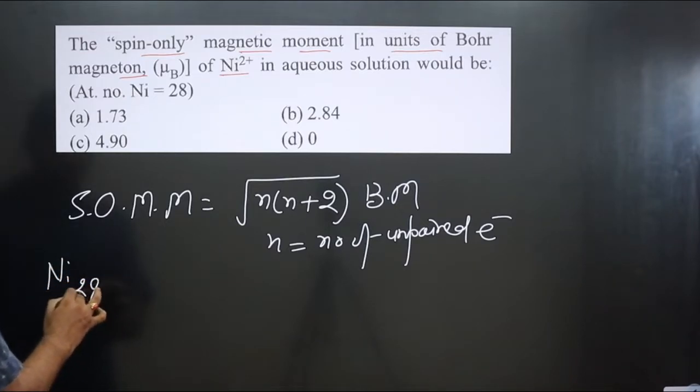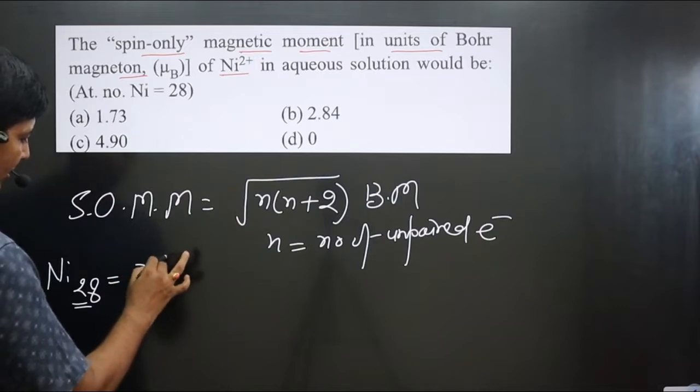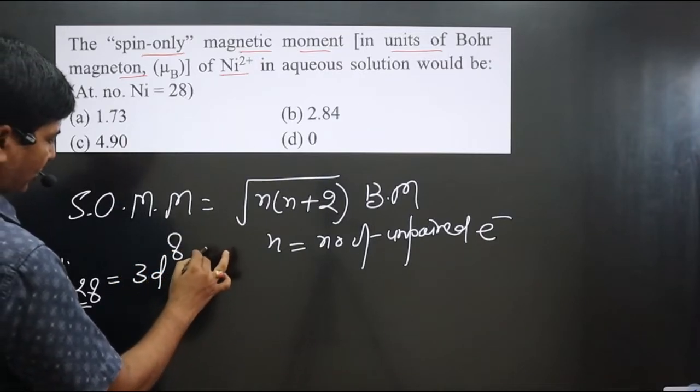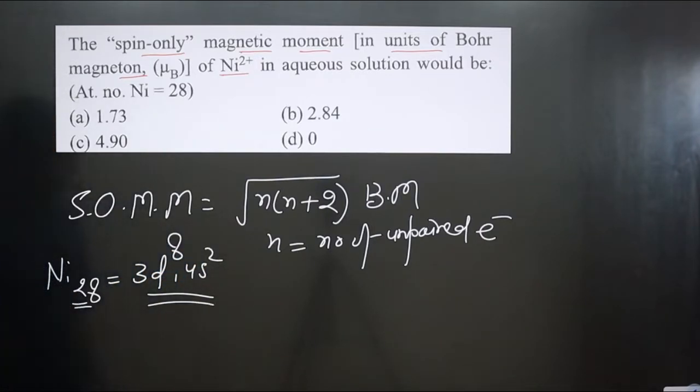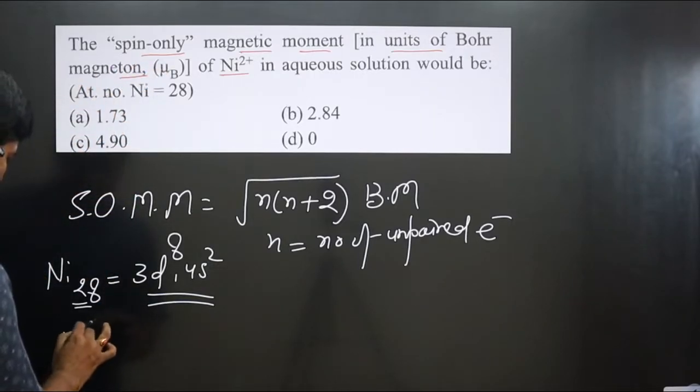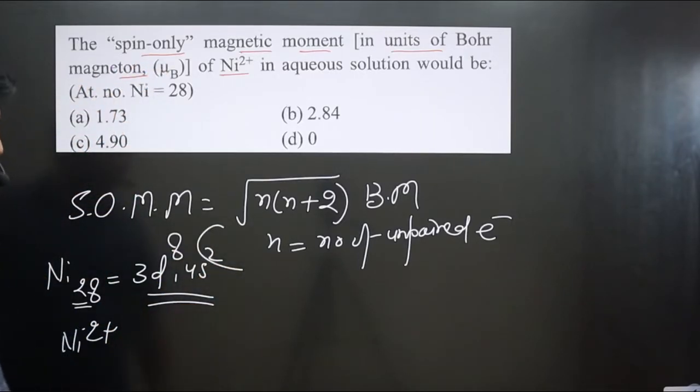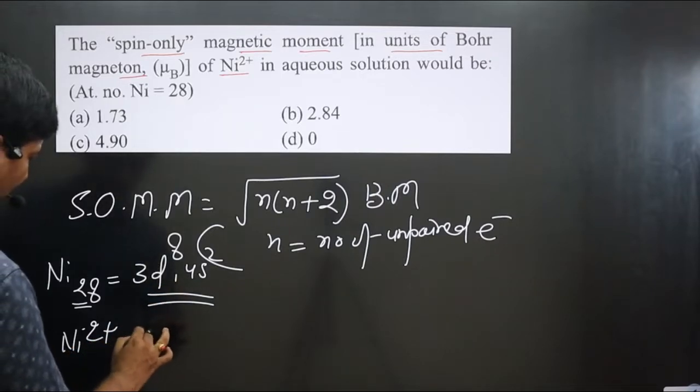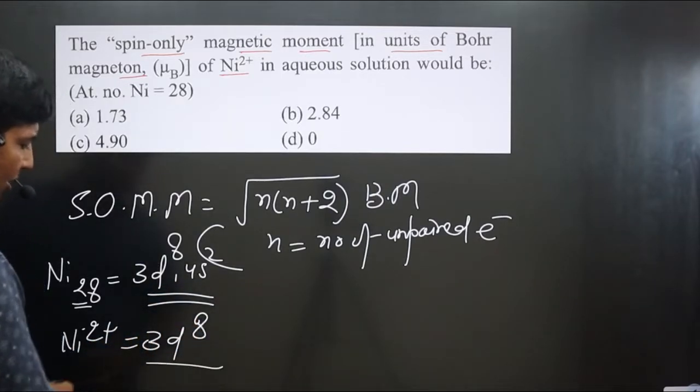Atomic number of nickel is 28. If you write outermost electronic configuration, 3d8 and 4s2 is there. It is losing how many electrons? Two electrons. So nickel 2 plus will be, it is losing 2 electrons from 4s orbital, we get 3d8.